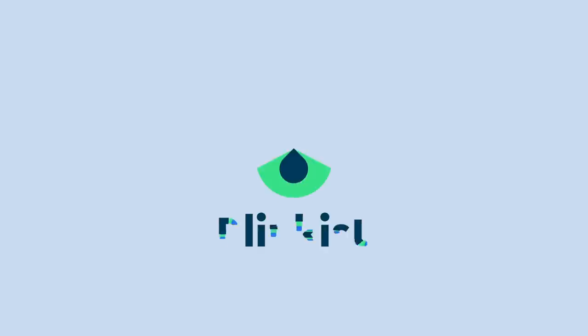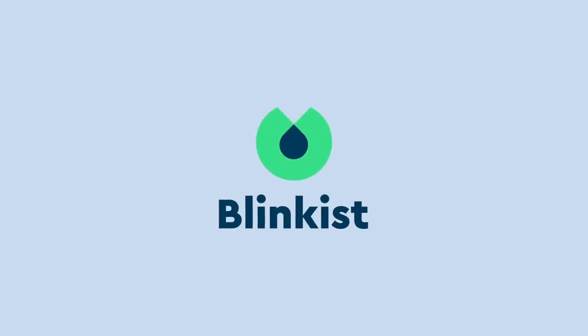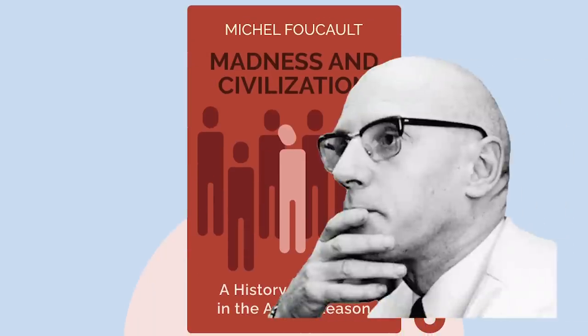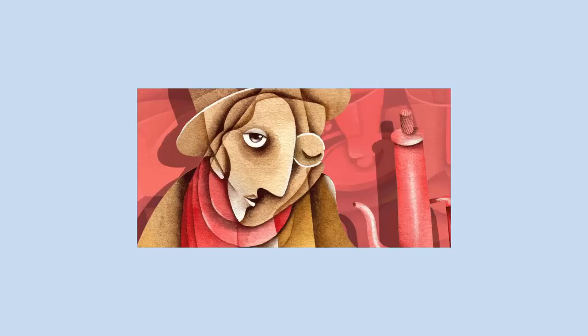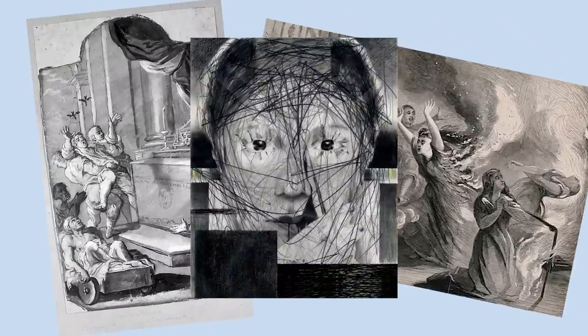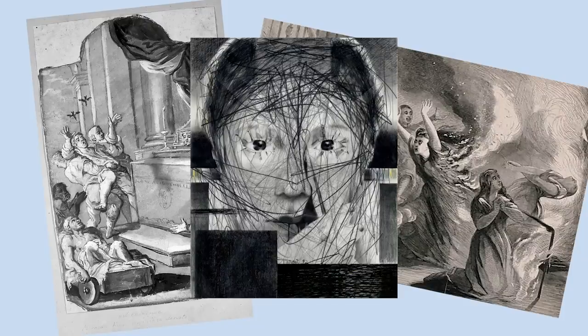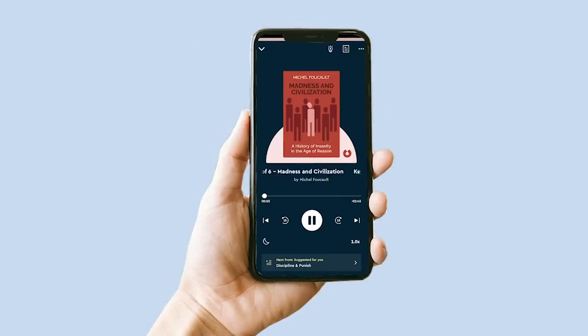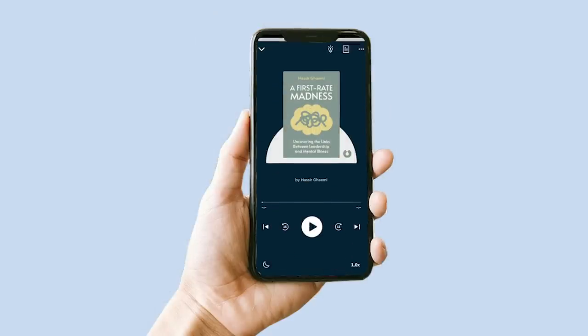This video was sponsored by Blinkist. One particularly interesting book on the subject of mental illness is Madness and Civilization by the prominent 20th century philosopher, Michel Foucault. This work explores the history and development of mental illness in the Western world, more specifically, the often troubling and misguided social and medical perception and treatment of the mentally ill. With this video's sponsor, Blinkist, you can learn from this book, along with many other books on similar subjects,